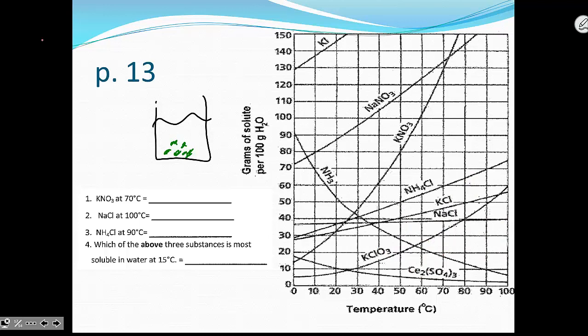So on page 13 they say what is the solubility of potassium nitrate at 70 degrees celsius. So on the graph you find potassium nitrate, that's this line right here, at 70 degrees celsius, you find 70 degrees, you follow it up, you could fit 130 grams in 100 milliliters of water.